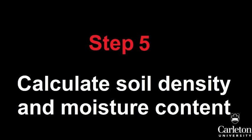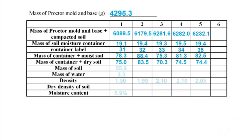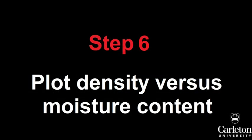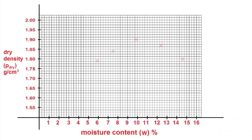Now that we have completed the standard Proctor compaction, we will need to calculate the soil density and moisture content for each of our tests. After 24 hours in the oven have passed, record the mass of each of your moisture containers plus the now dry soil. Plot the density of the compacted sample against its moisture content, with density in grams per cubic centimeter on the y-axis and moisture content as a percentage along the x-axis. Plot all of your data points from each test, connect the points with a curve, and the peak of the curve is the optimal moisture content.